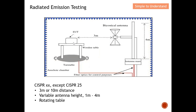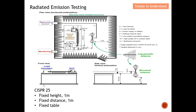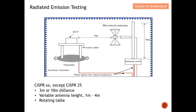CISPR 25 is slightly different from the rest. The key differences are: the antenna has a fixed height of 1 meter, the distance is also 1 meter (compared to 3 or 10 meters for other CISPR standards), and the turntable does not rotate — meaning the EUT faces one fixed direction. Keep these factors in mind when performing CISPR 25 testing.